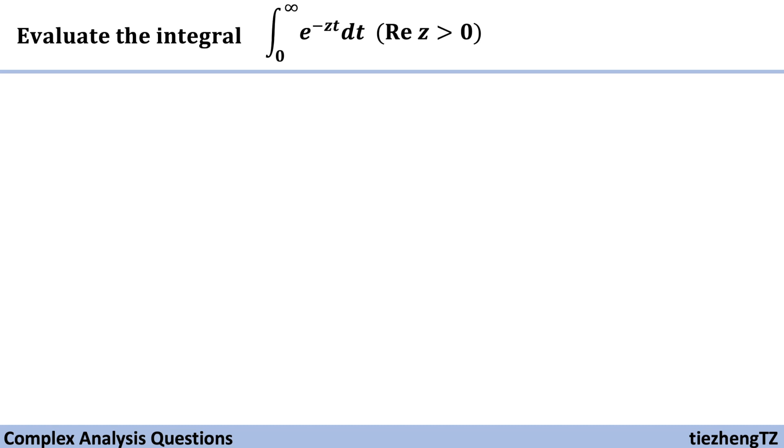This question is to evaluate the integral from zero to infinity of e to the power of minus z times t, dt, and the real part of z is greater than zero. We've already introduced many examples about how to evaluate the integral.